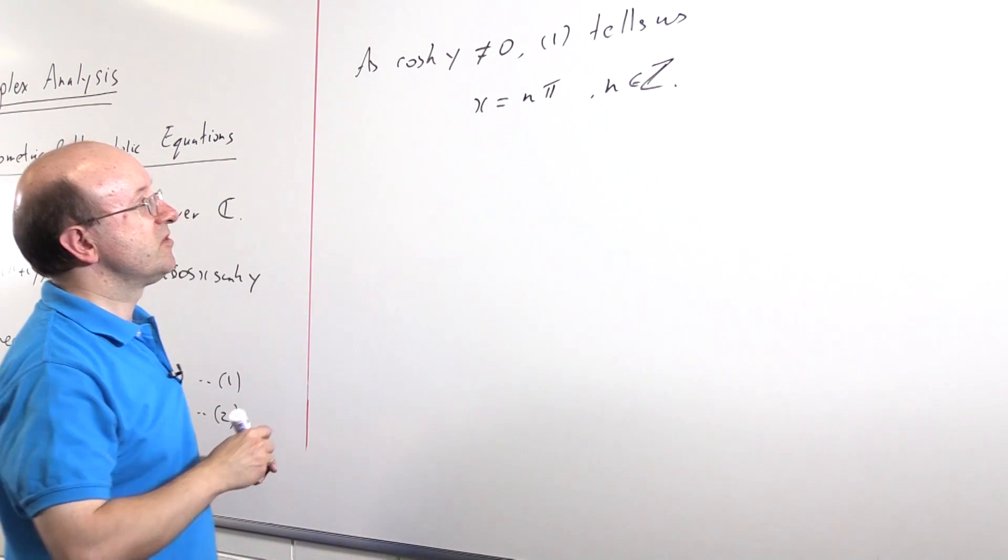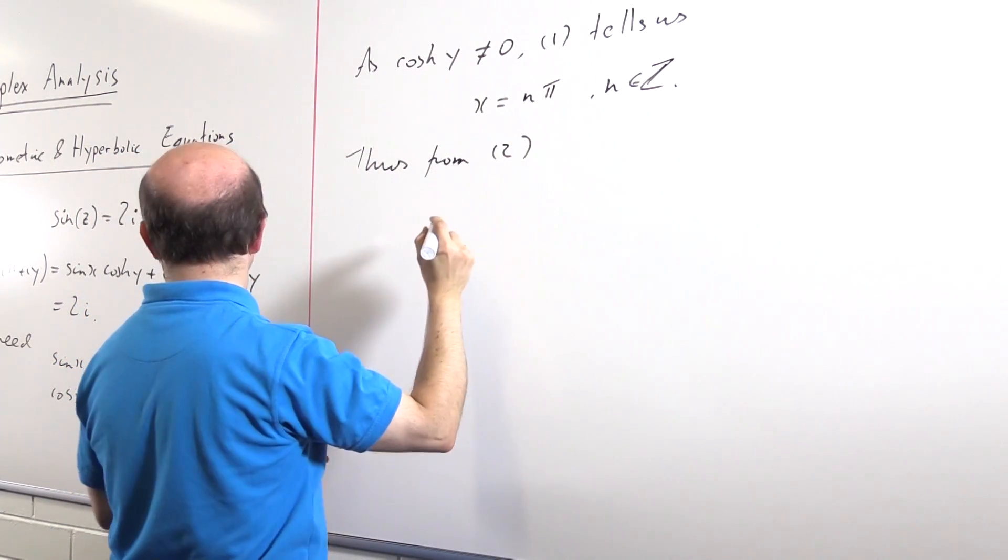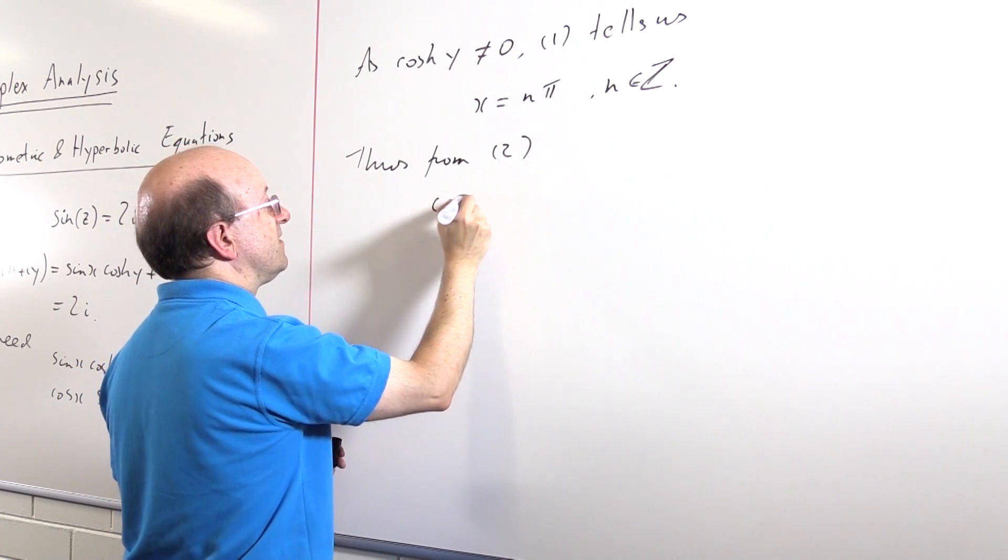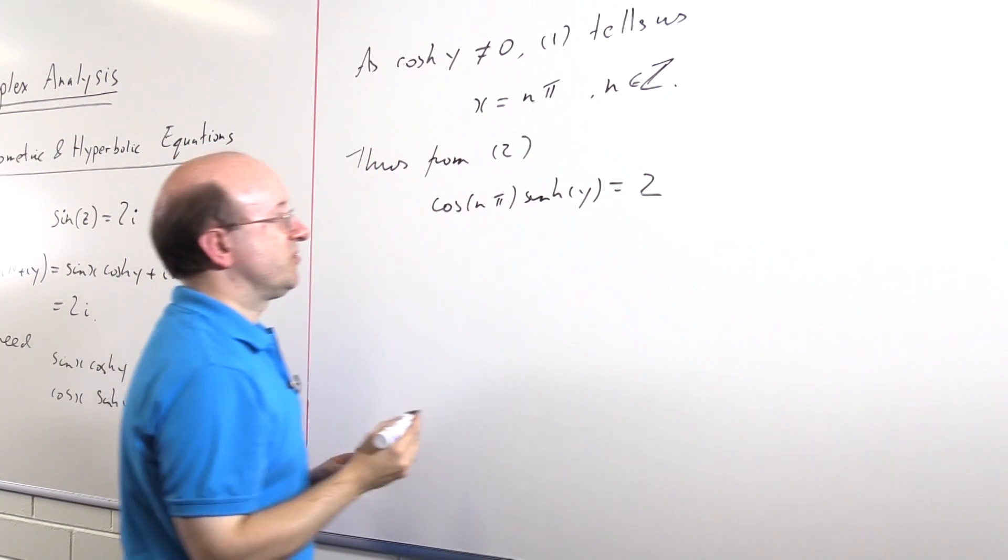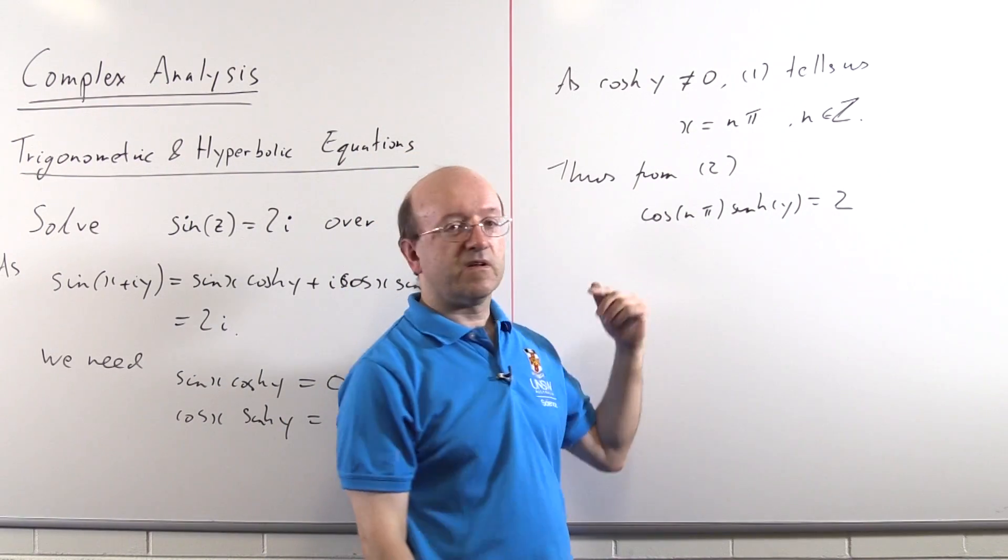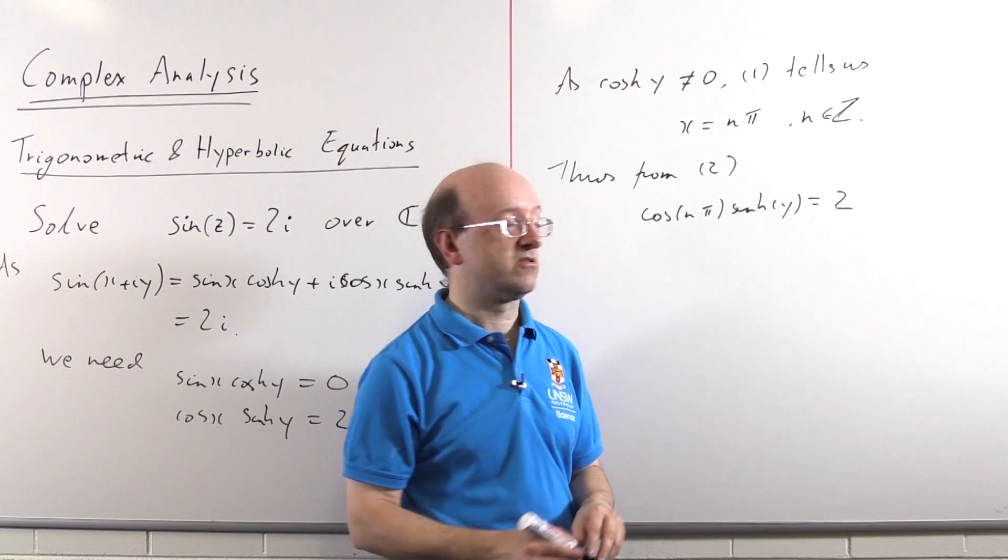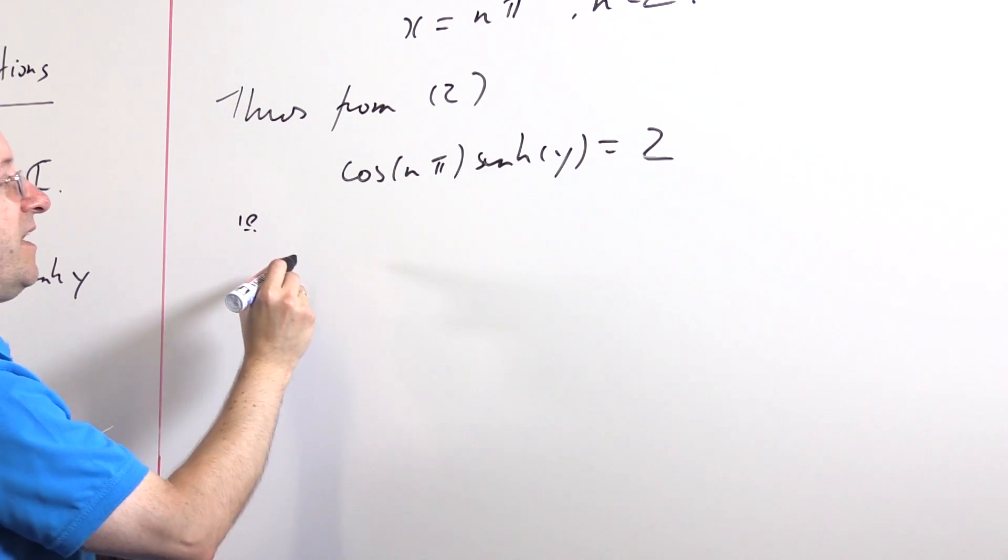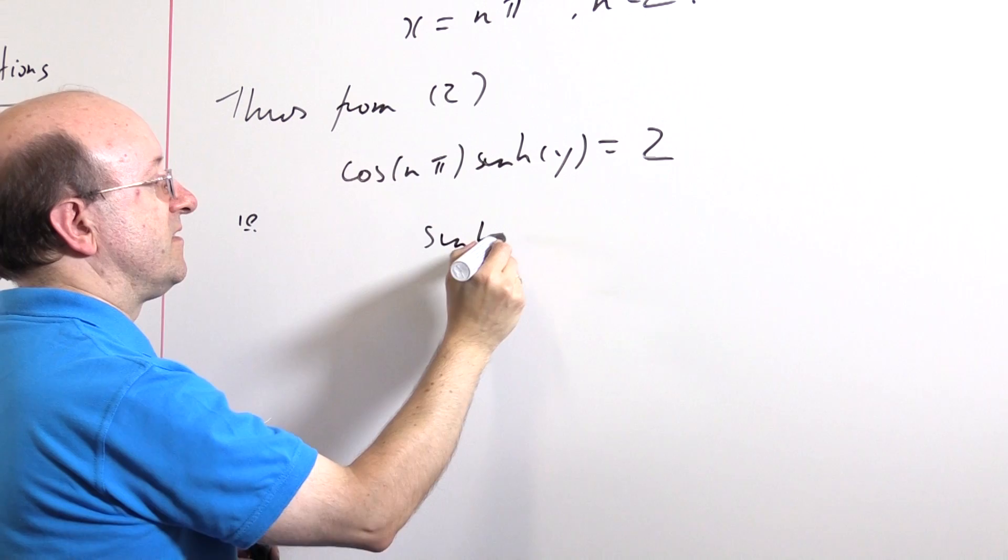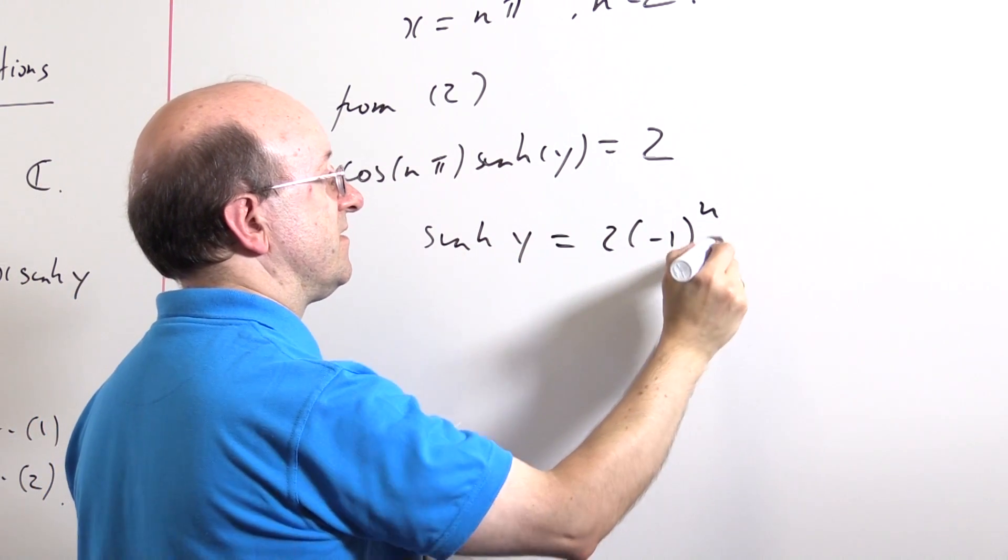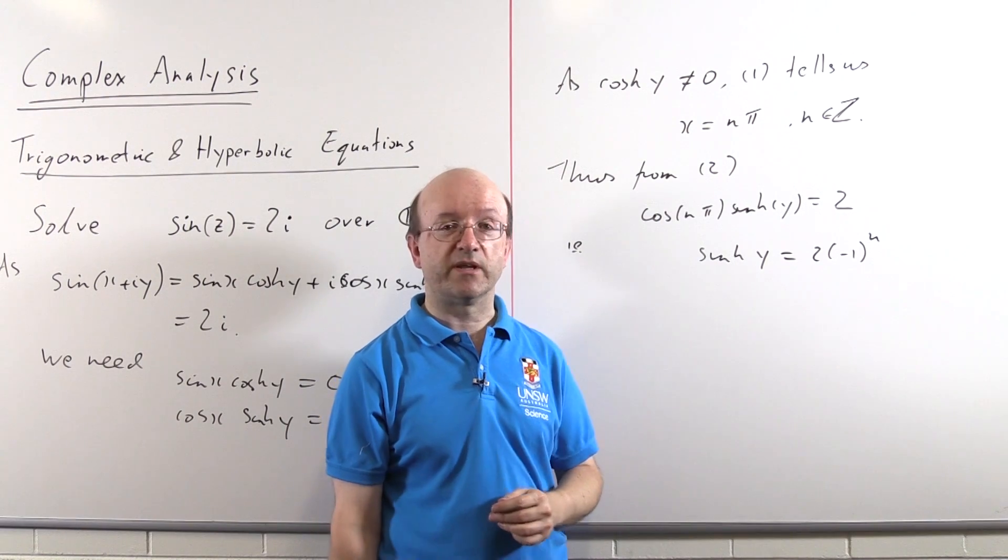Now we can put this into equation 2. We get cos of n pi times hyperbolic sine of y is equal to 2. Now cos n pi is really just a fancy way of writing minus 1 to the n. So this is minus 1 to the n, sinh of y is 2. And since this is minus 1 to the n here, we might as well move it over to the other side. Sinh of y is twice minus 1 to the power of n.